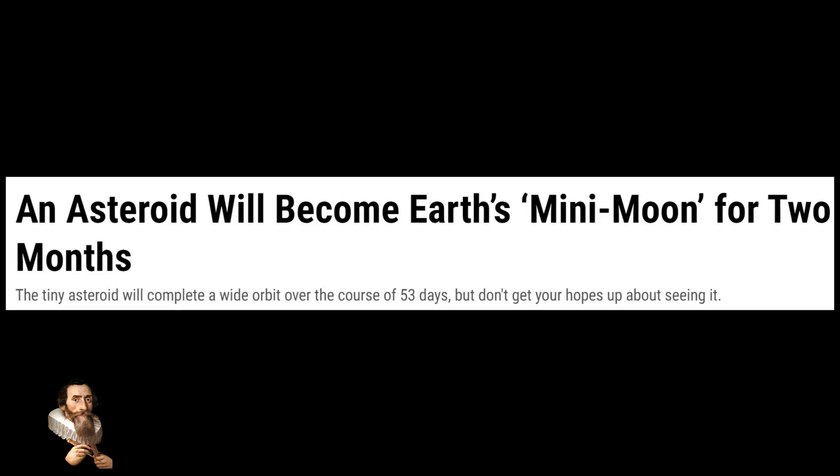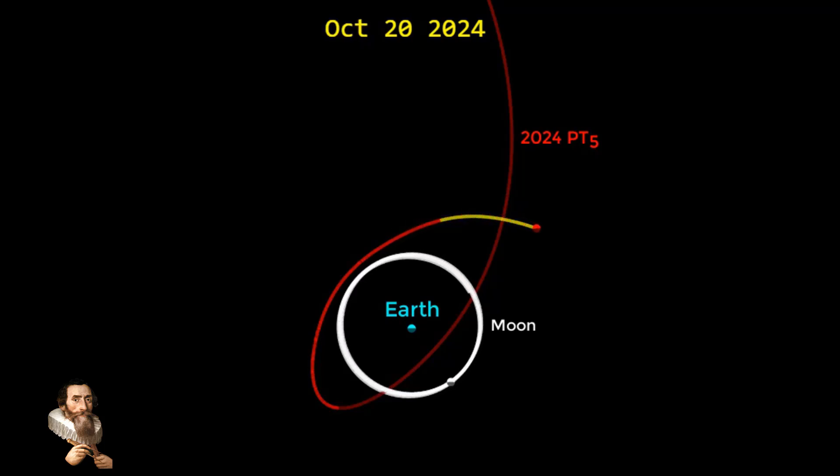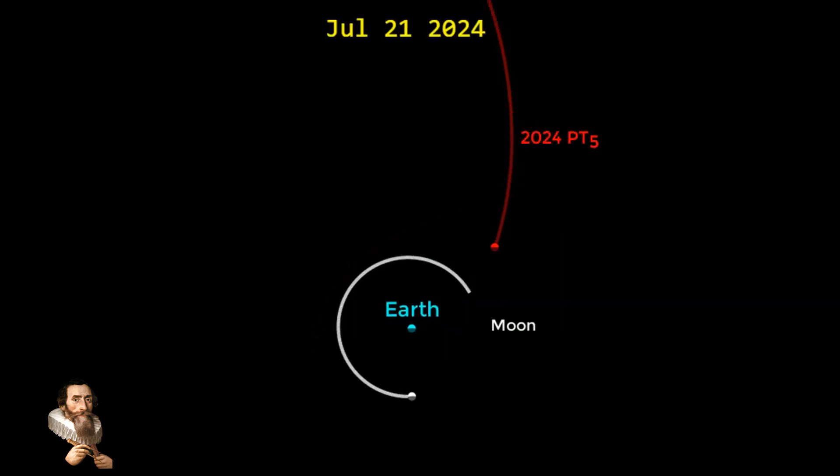Despite the excitement surrounding this event, 2024 PT5 will be too dim to be seen with the naked eye or even with most backyard telescopes. Its brightness will not exceed magnitude 22, which is far below the visibility threshold for unaided human eyes. This means that while the mini-moon will be present, it will remain largely invisible to casual observers.